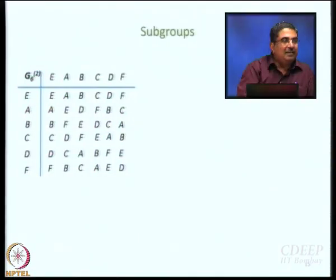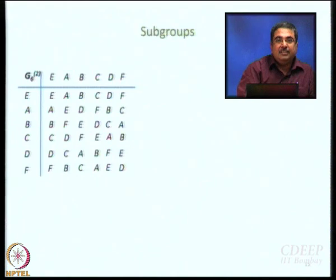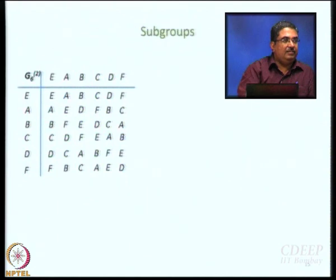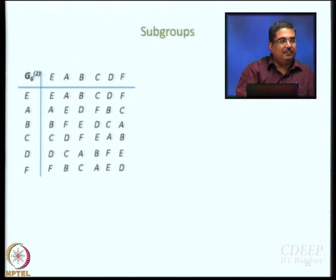Let us talk about subgroups. Similarly, groups can have subgroups. A subgroup is a collection of some elements within a group that form a group by themselves. When I say they form a group by themselves, it means they should satisfy those 4 properties: closure, identity element, reciprocity, and associativity.